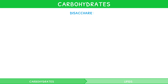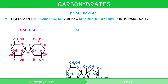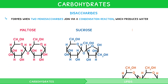Disaccharides are formed when two monosaccharides join via a condensation reaction, which produces water. As discussed in our previous IB Biology Topic 2 video, this would be an anabolic reaction. The common disaccharides you need to recall are maltose, sucrose and lactose.